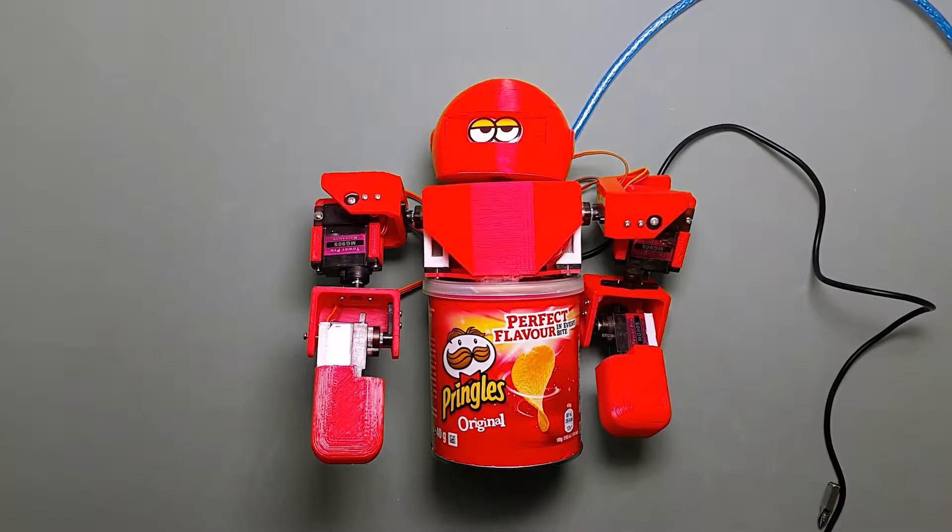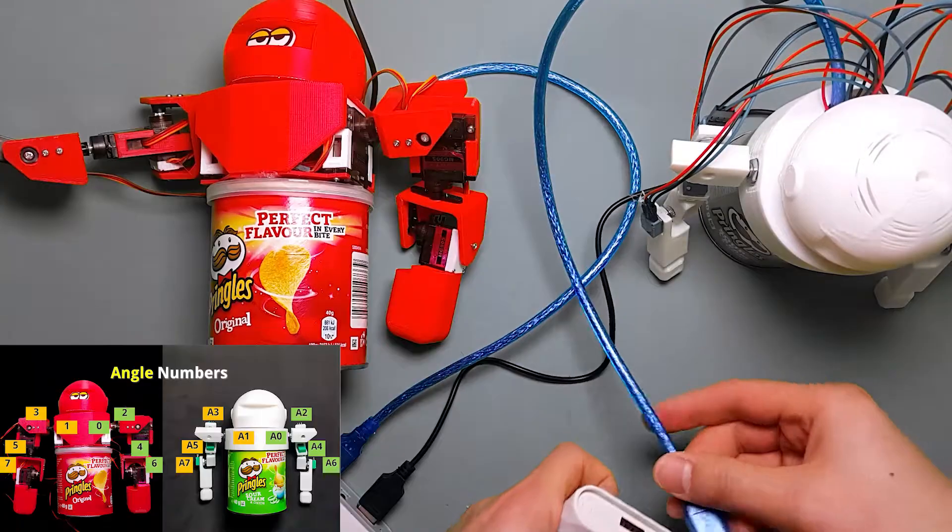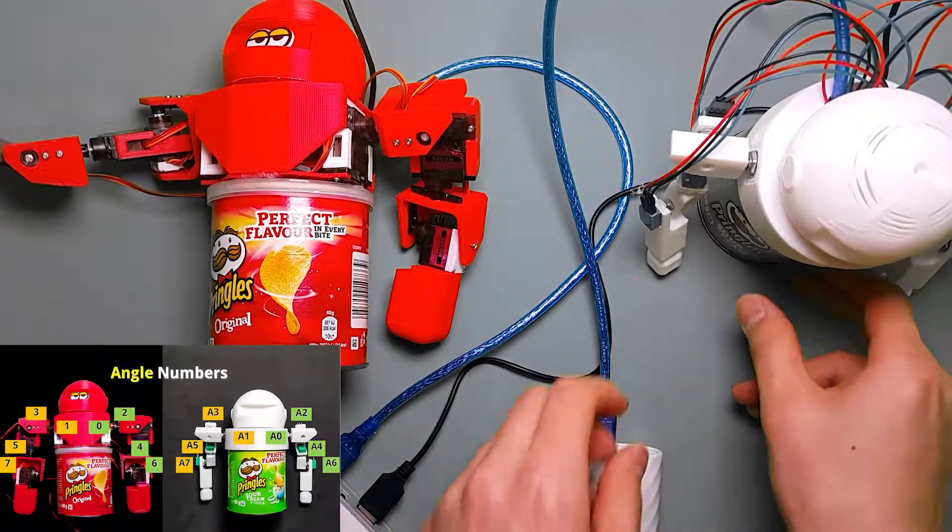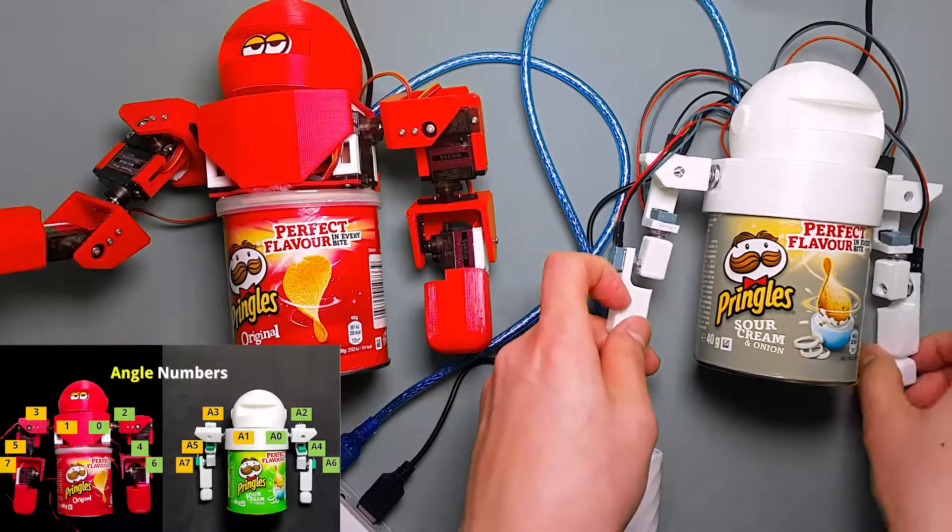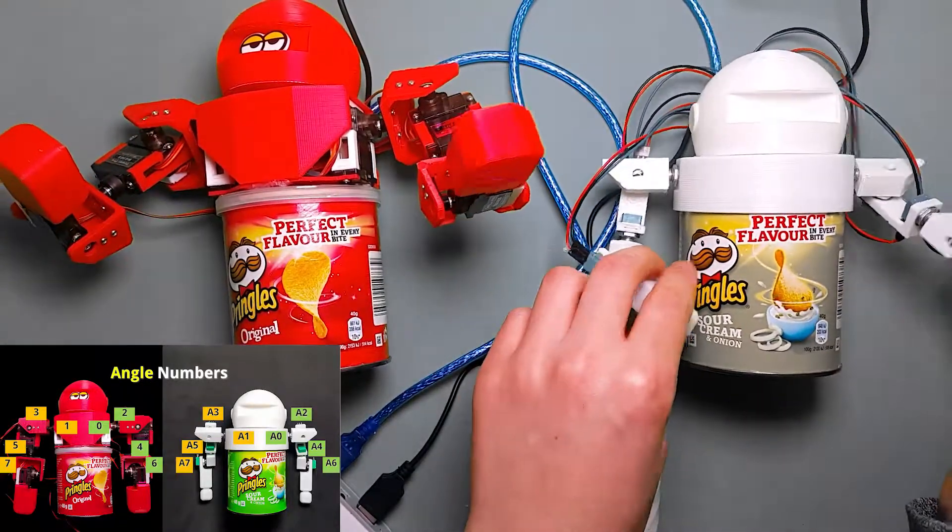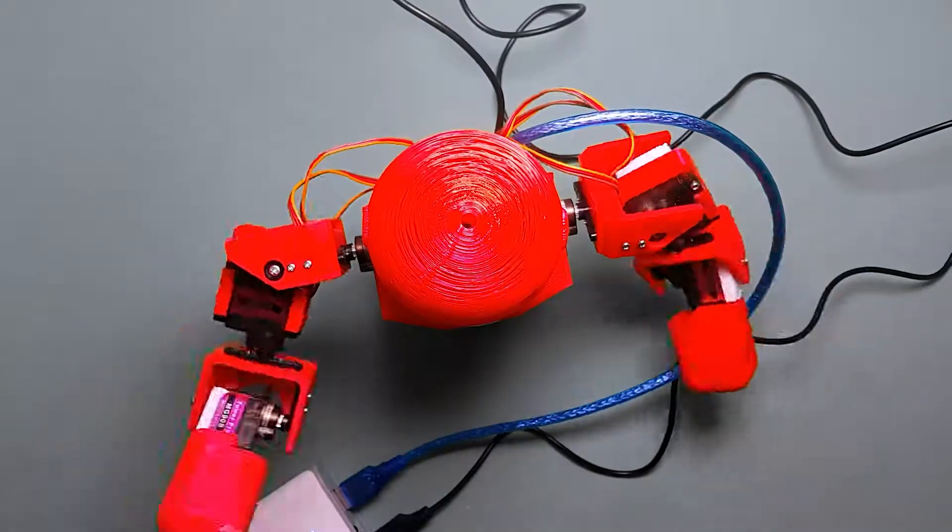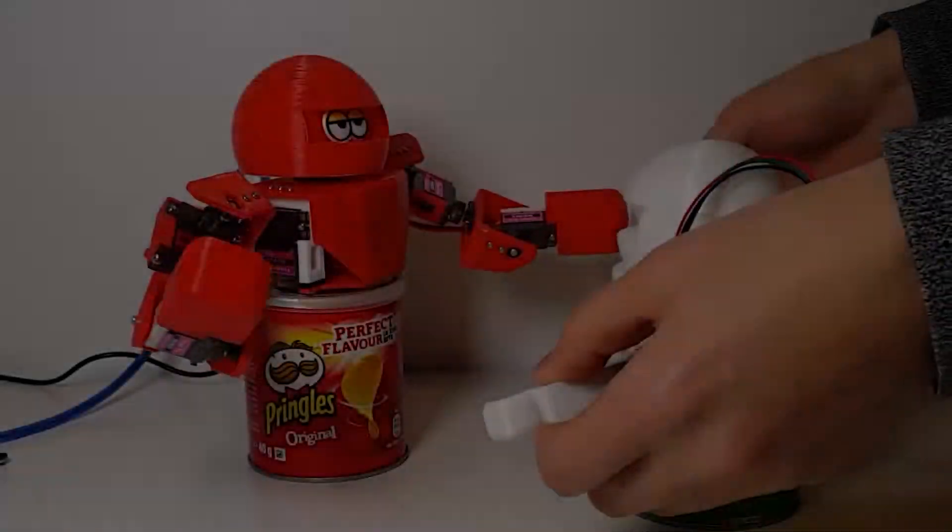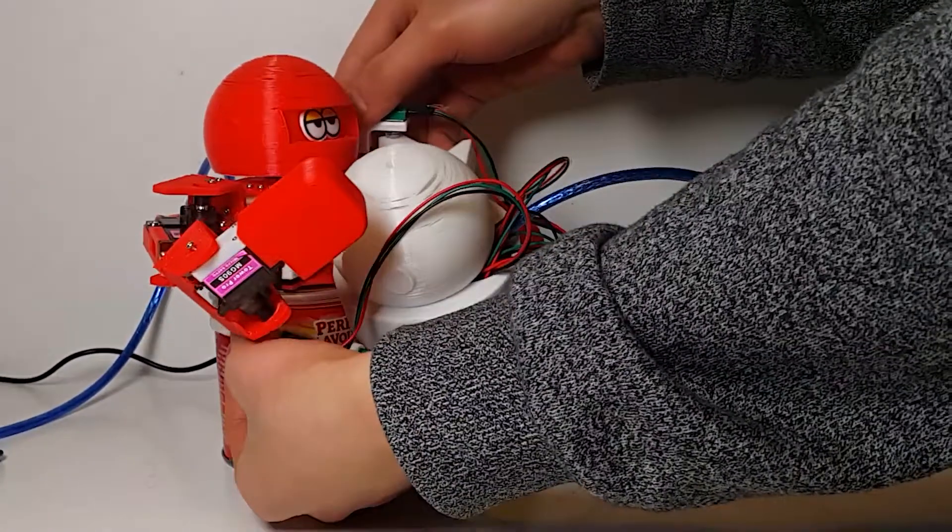Almost done. Turn on the power and try the test. In order to adjust the angle, reassemble the potentiometers of the master robot. Congratulations! We made it!